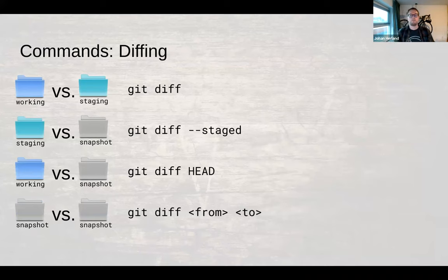Now, to see the differences between the working directory and the staging area, you can use git diff. And if you want to see the changes that are scheduled to become part of the next commit, git diff dash dash staged will show you those. Git diff against head will show you the diff between the working directory and the latest commit, which in git is always called head. Finally, you can use git diff and then pass two commits to see the difference between any two commits in the repository.